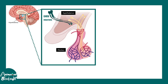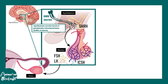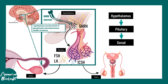GnRH neurons secrete GnRH hormone in bursts, and these bursts of gonadotropin releasing hormone release happen during puberty. GnRH triggers the pituitary to secrete either FSH or LH, or in the case of males, ICSH. FSH and LH work on the female reproductive system, whereas ICSH works on the male reproductive system, for example on the testes.